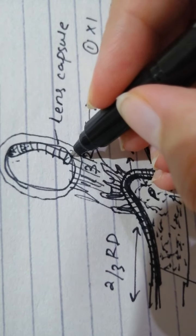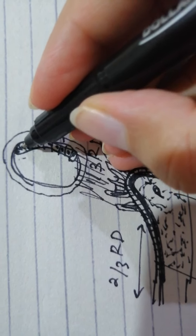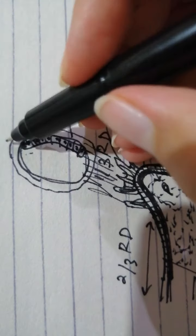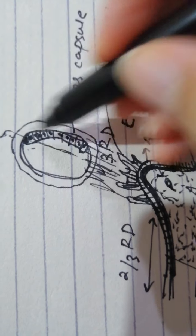Interestingly, the subcapsular epithelium is only on the anterior aspect. So you can kind of draw it like this to show this is the subcapsular epithelium. And then this is the equator. This is the equator.